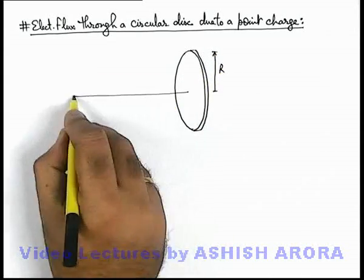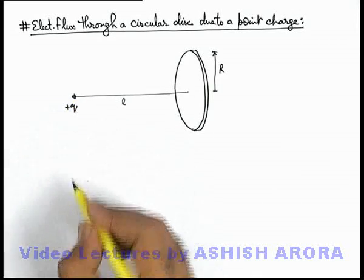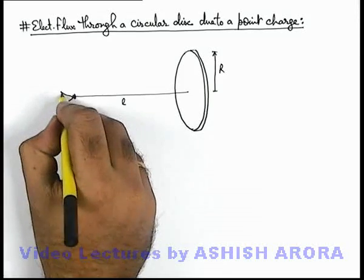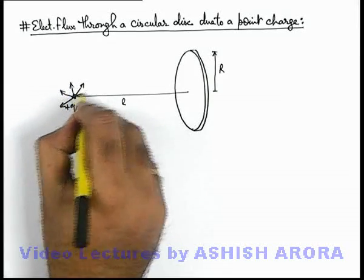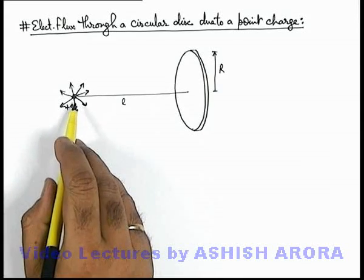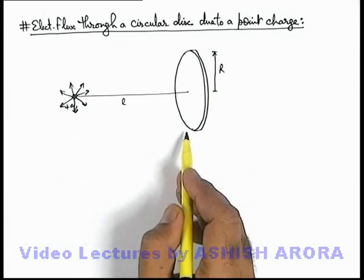On its axis at a distance l we have placed a point charge plus q. We know that a point charge originates its electric flux uniformly in all directions. Here we are required to find the amount of flux from this charge q which passes through the surface of this disc.